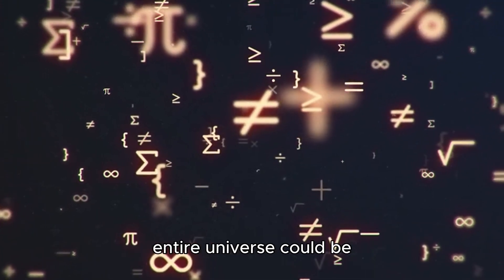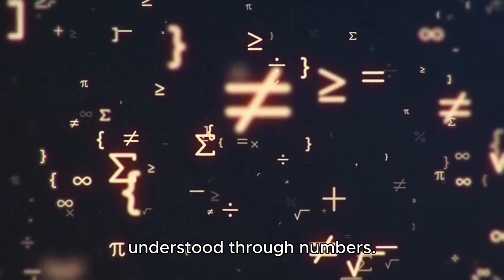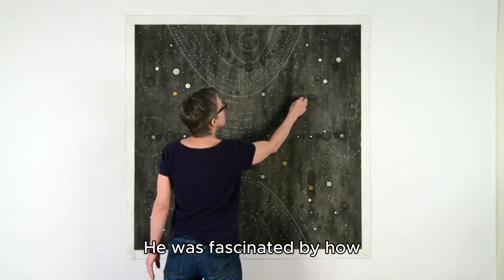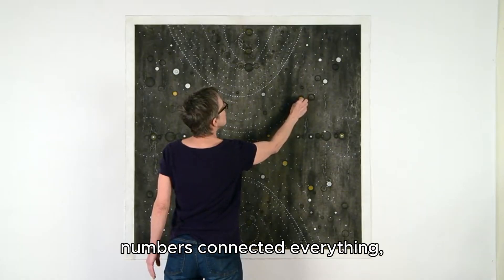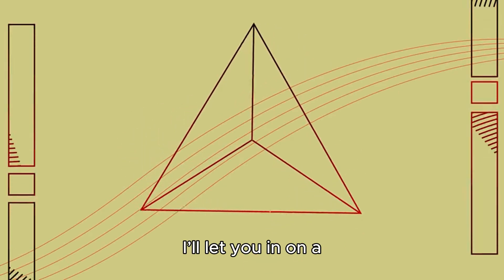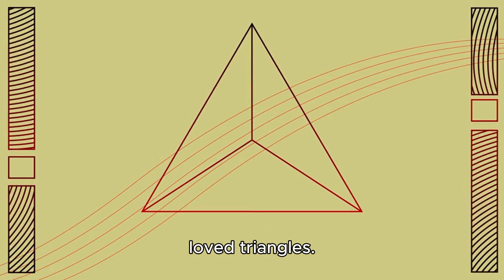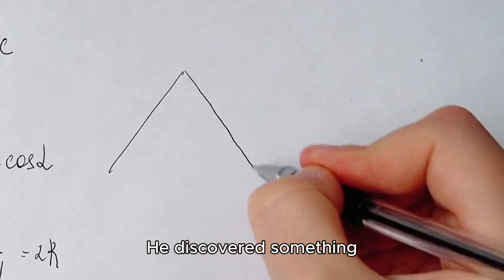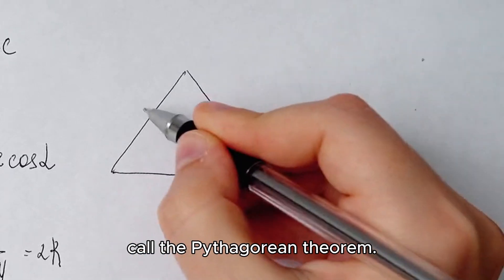Pythagoras believed that the entire universe could be understood through numbers. He was fascinated by how numbers connected everything, from the planets in the sky to the notes of music. I'll let you in on a secret: Pythagoras loved triangles.